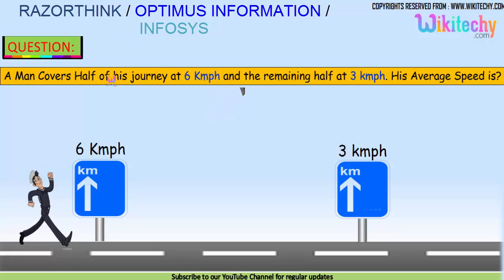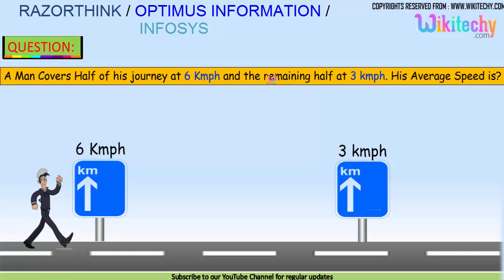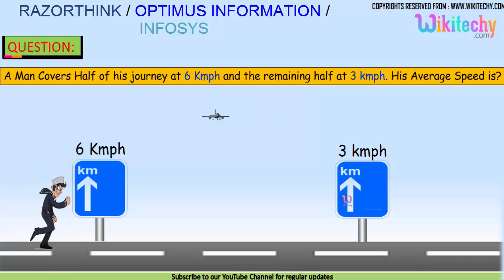A man covers half of his journey at 6 km per hour and the remaining half at 3 km per hour. What is his average speed?